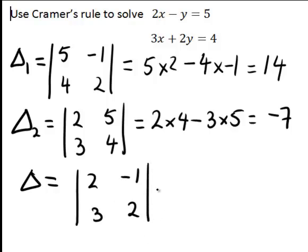And again we're working out this matrix determinant, so that's going to be 2 times 2 minus 3 times negative 1, giving us 4 plus 3 is equal to 7.